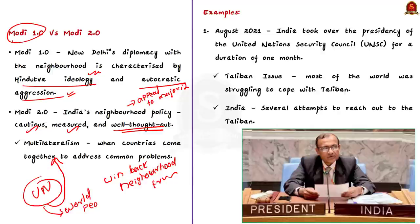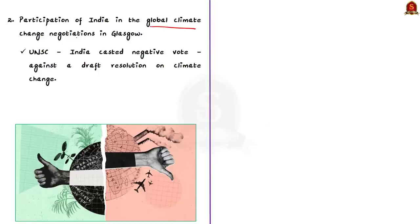Let us see some examples highlighting the change in India's foreign policy. Recently, India began its eighth two-year elected term in the United Nations Security Council. In August 2021, India took over the presidency of the United Nations Security Council for a duration of one month. India took several firm stances during its presidency, especially in relation to the Taliban issue. Most of the world was struggling to figure out how to cope with the Taliban, but India, by skillfully shaping the world body's response to the Afghan crisis mainly during its presidency of the UNSC, was outstanding. India has also made several attempts to reach out to the Taliban as well.